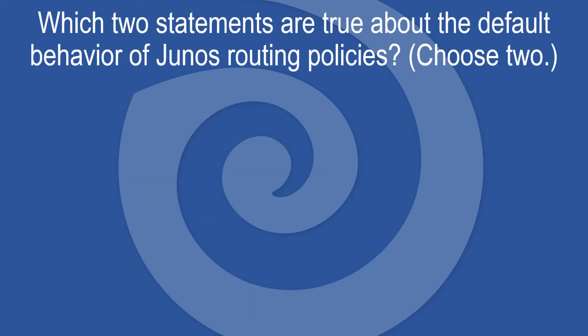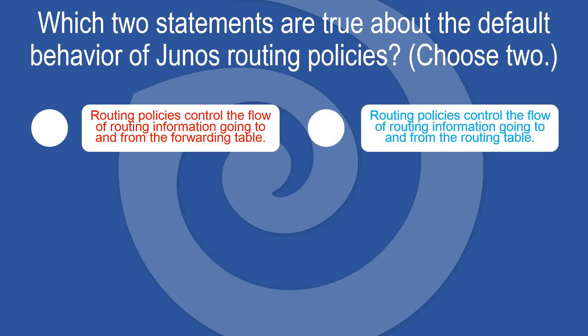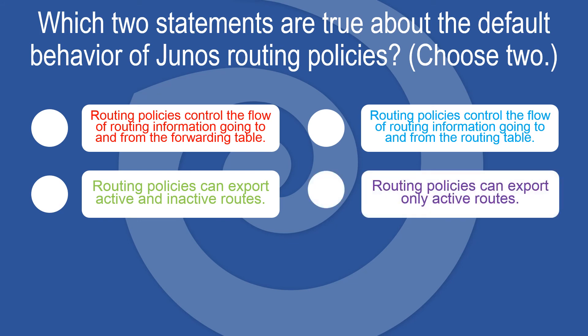Which two statements are true about the default behavior of Junos routing policies? Choose two. Routing policies control the flow of routing information going to and from the routing table. Routing policies can export only active routes.